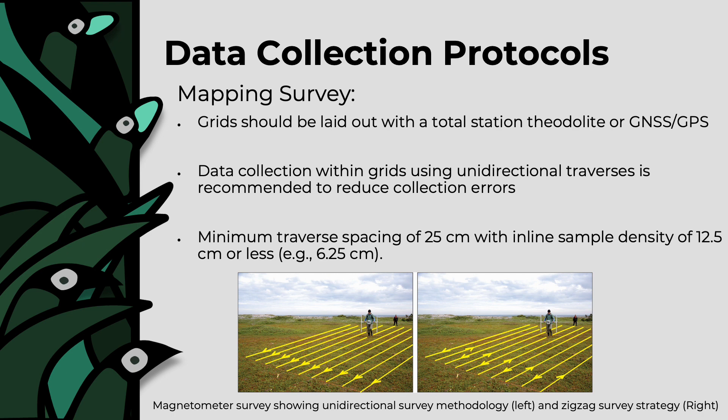For a mapping survey, grids should be laid out with a total station, the autolite, or a GNSS or GPS system. Data collection within grids using unidirectional traverses is recommended to reduce collection errors. A minimum transverse spacing of 25 cm with inline sampling density of 12.5 cm or less is recommended.